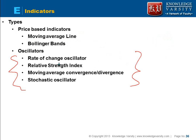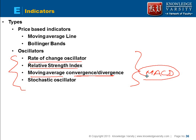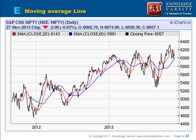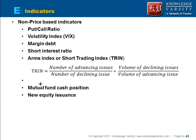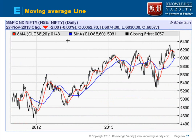Examples of oscillators include the Rate of Change oscillator, the Relative Strength Index, Moving Average Convergence Divergence — called MACD — and the Stochastic Oscillator. Then there are also non-price-based indicators such as put-call ratio, volatility index, and margin, which we will cover once we go through moving average lines.